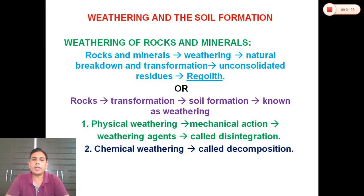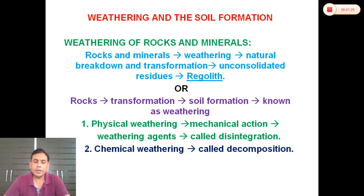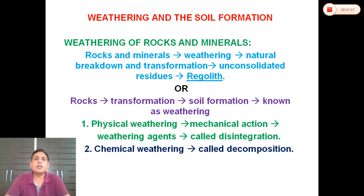There are two types of weathering processes: physical weathering and chemical weathering. Physical weathering is also called mechanical weathering. Different weathering agents such as water, ice, and temperature play important roles in physical weathering, which is also called disintegration. Chemical weathering involves different chemical processes taking place at the surface of rocks and minerals, and is also called decomposition.